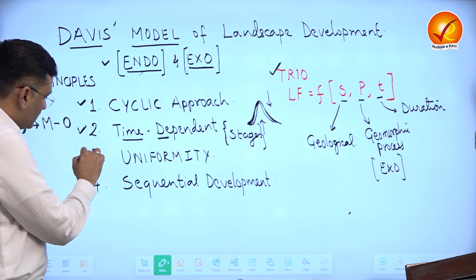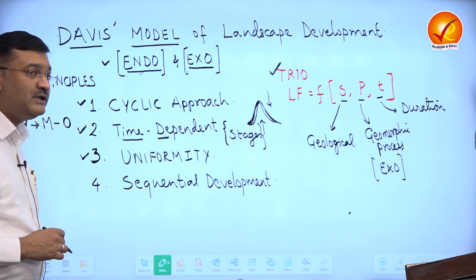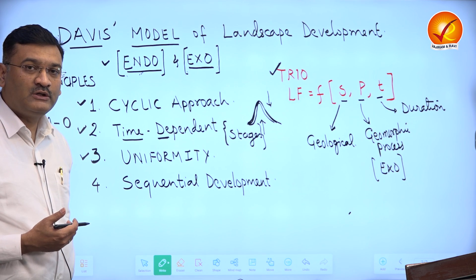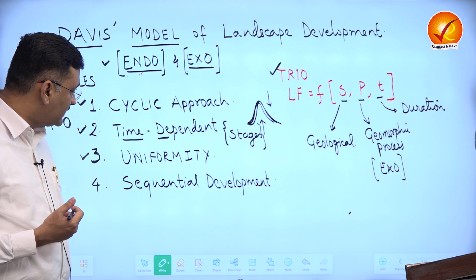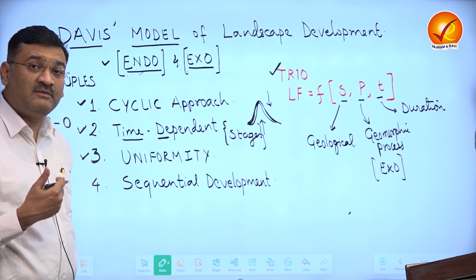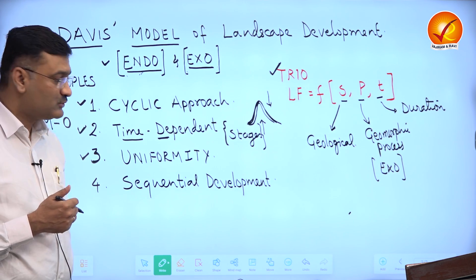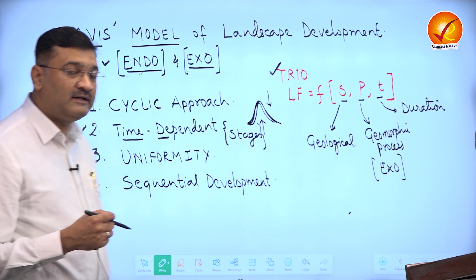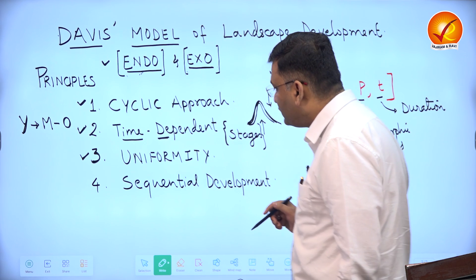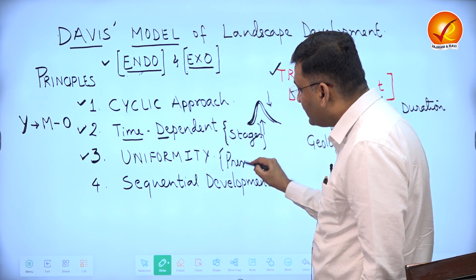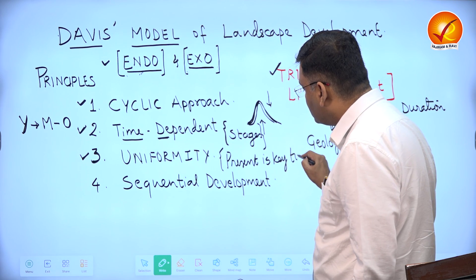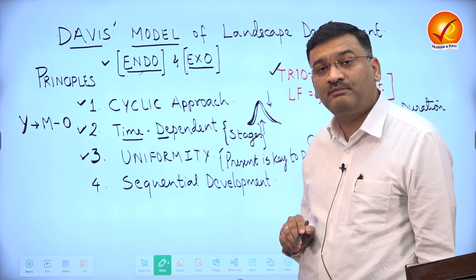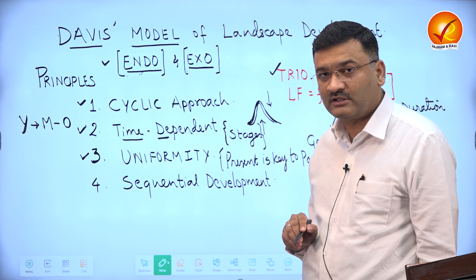The third principle is uniformity, also known as uniformitarianism — the uniformity of the physical process. According to Davis, whatever processes operated in the past are the same as those operating today and will operate in the future. This principle of uniformitarianism allows us to connect the present to the past. Davis described this as: the present is the key to the past, based on the uniformity of physical processes operating on the surface of the Earth.